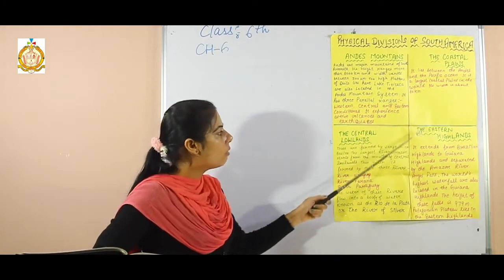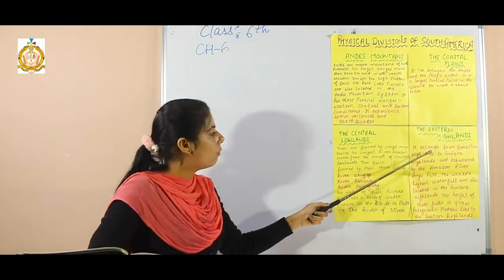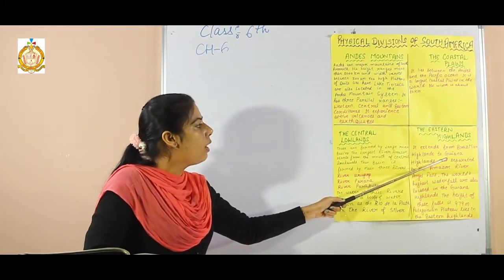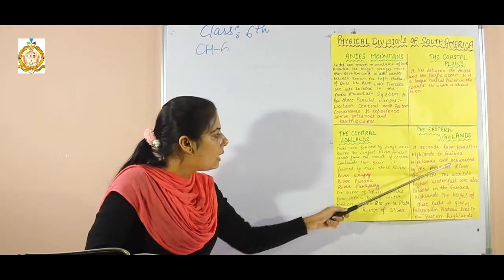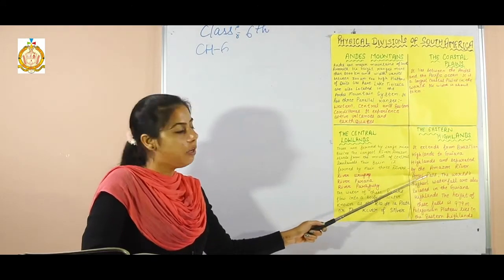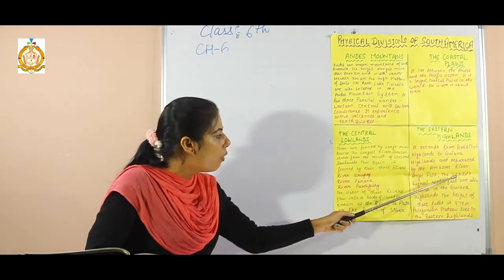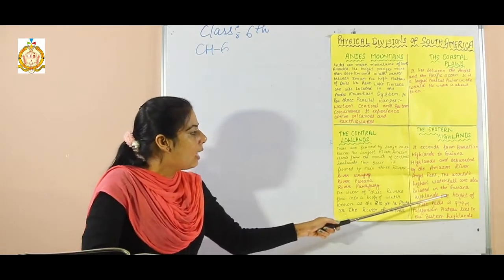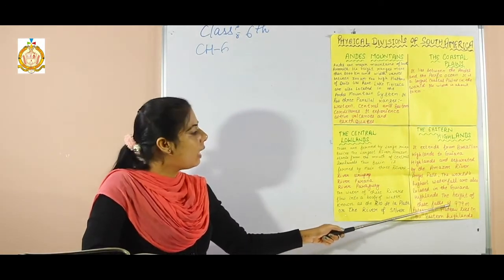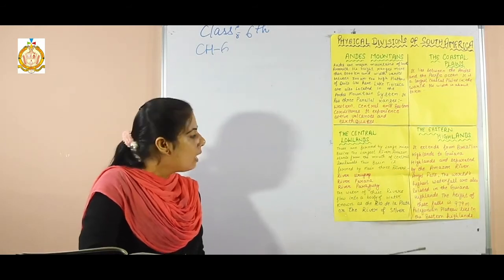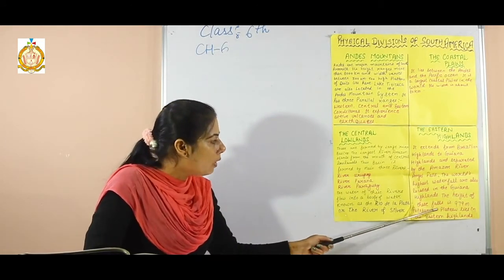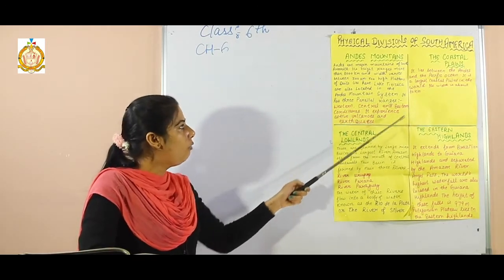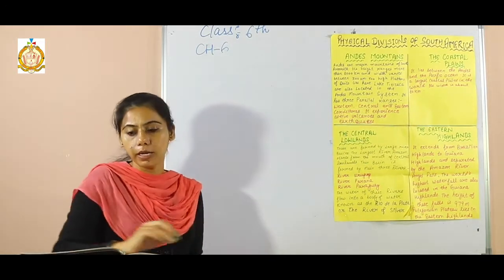The fourth physical division of South America is the Eastern Highlands, which extend from the Brazilian Highlands to the Guiana Highlands, separated by the Amazon River. Angel Falls, the world's highest waterfall, is also located in the Eastern Highlands with a height of 979 meters. The Patagonian Plateau also lies in the Eastern Highlands. These are the four physical divisions of South America.